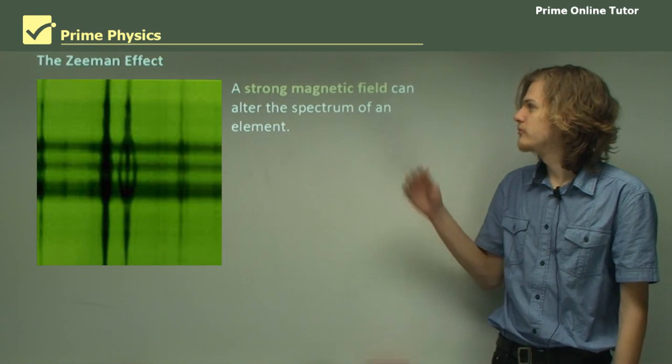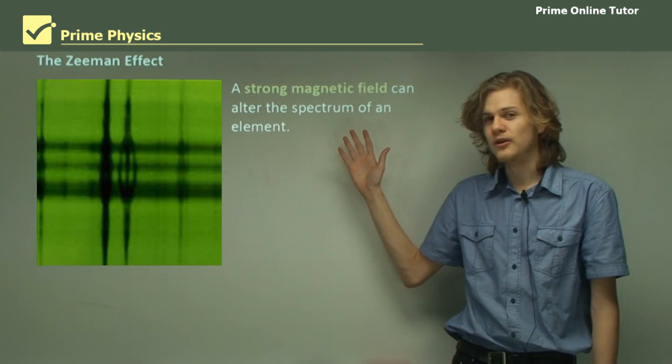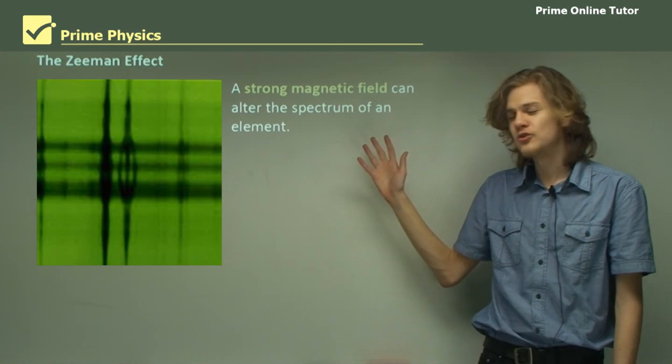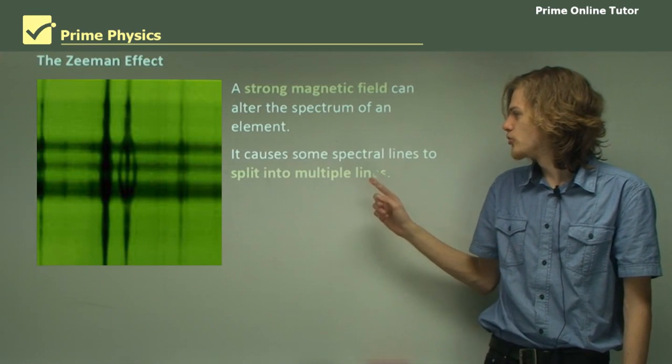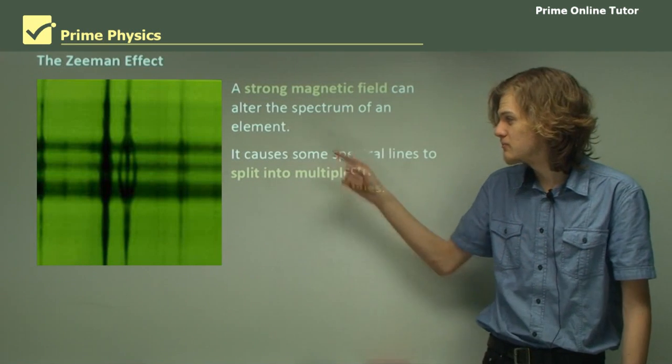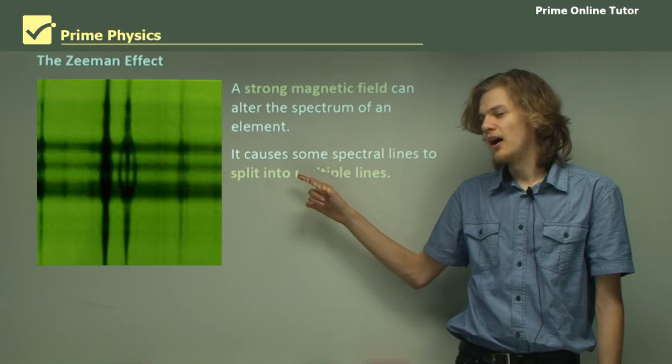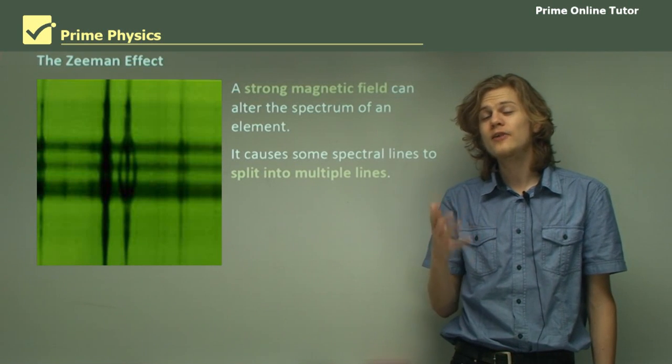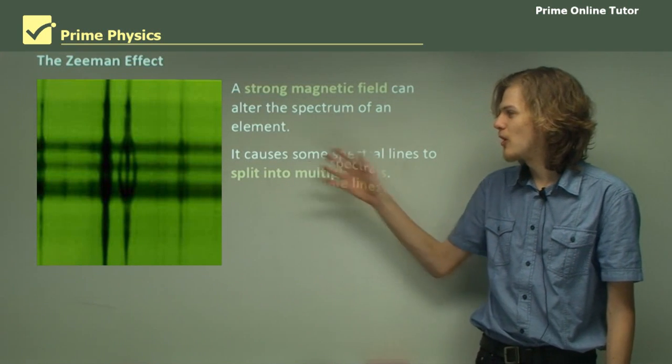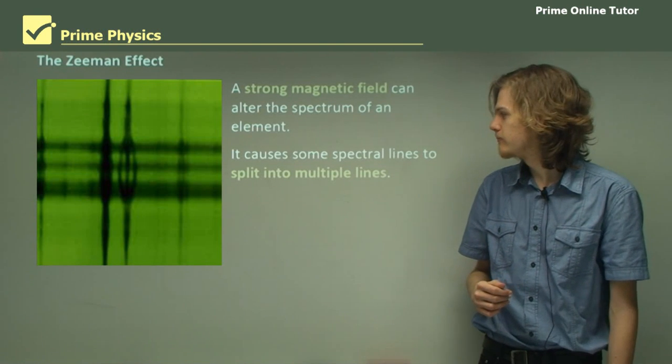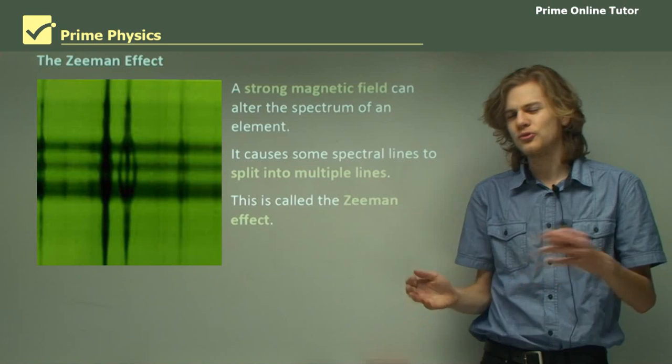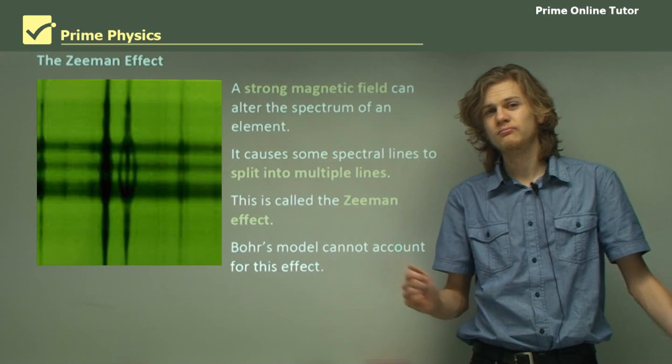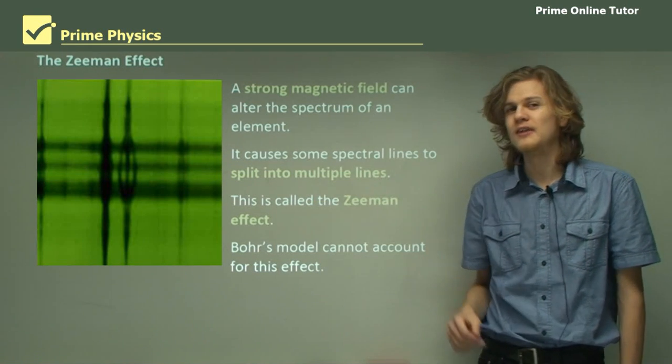Another problem was the Zeeman effect. So it turns out that a strong magnetic field, I'm talking really strong, like magnetic fields at the surface of the Sun, can alter the spectrum of an element. It can cause some spectral lines to split into multiple lines, which we can see in this photograph over here. This is in fact spectral lines near a sunspot on the Sun. As it turns out, sunspots are caused by very strong magnetic fields. And that's why we're able to see the Zeeman effect produced. It's called the Zeeman effect because it was first discovered or described by a guy called Zeeman. And as we can see, Bohr's model can't account for that at all. There's no way for it to describe a splitting of the spectral lines that we can see in this photograph.